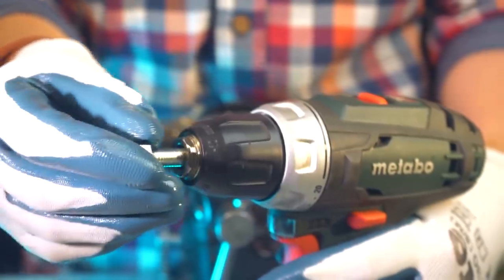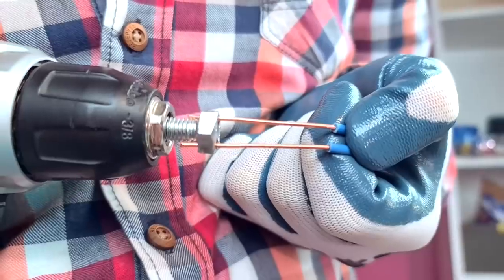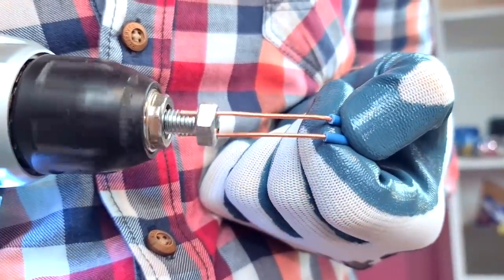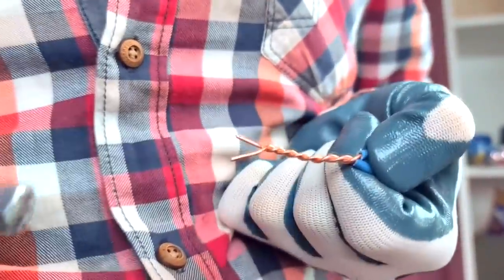Now put the bolt in the screwdriver and put the wire through the holes. After a little bit of practice, the bolt will twist our wires quickly and firmly thanks to the rotation in the screwdriver.